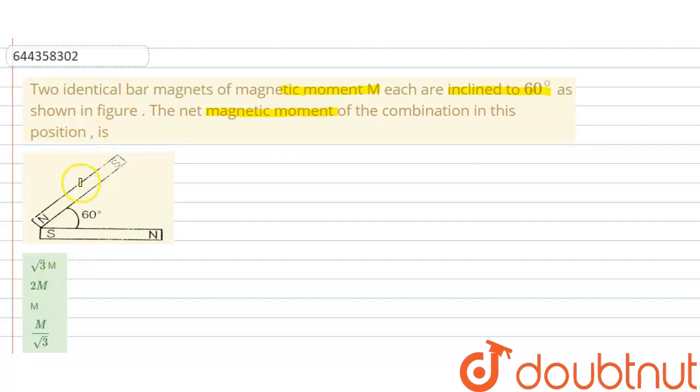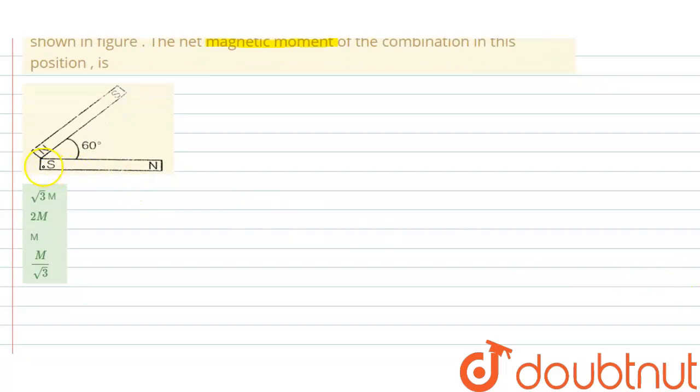These two are identical bar magnets, so their magnetic moments are same. We know that direction of magnetic moment is from south to north.